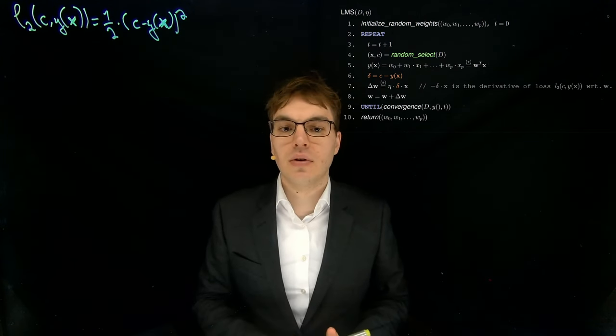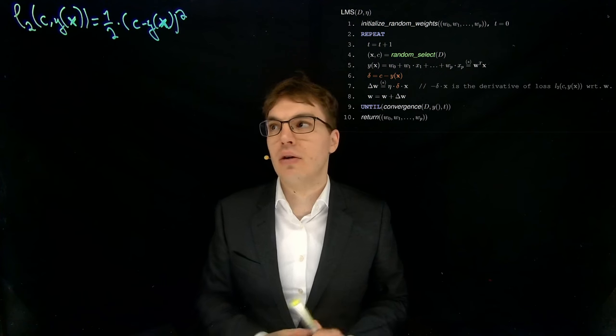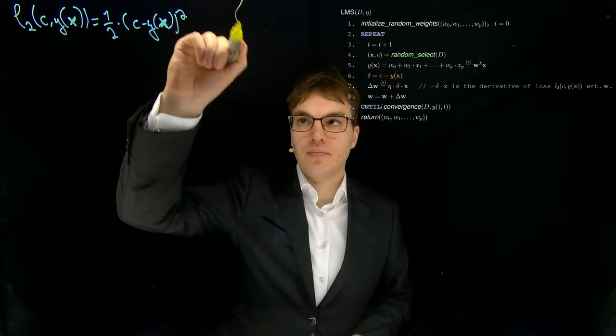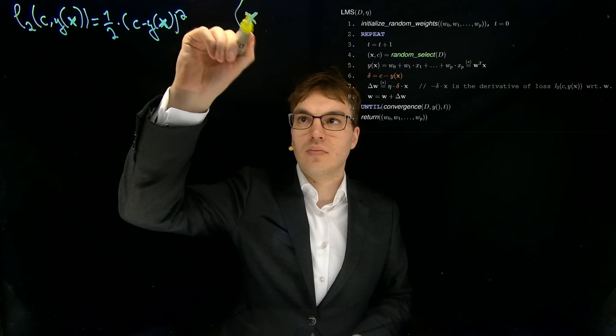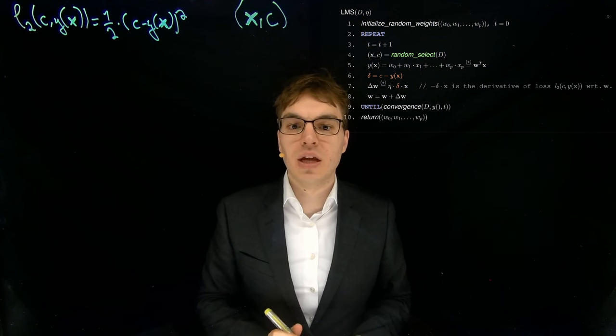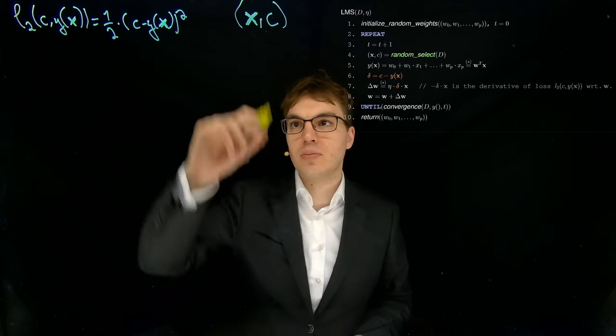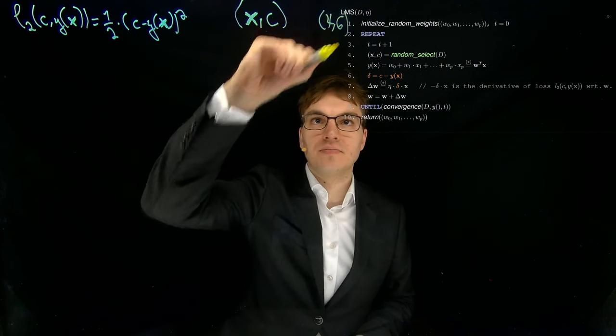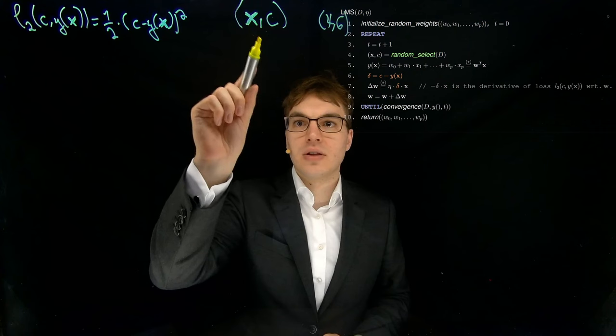But for a specific ground truth pair, and what this ground truth pair is, we have X as a vector and C. It is the combination for one point that we really want to be on this line, and this point is 4, 6. But now we need to convert this into this format.